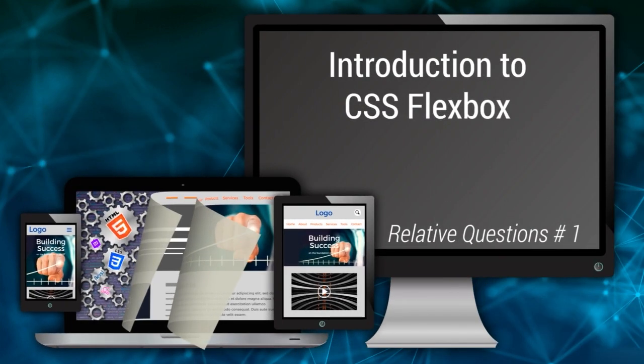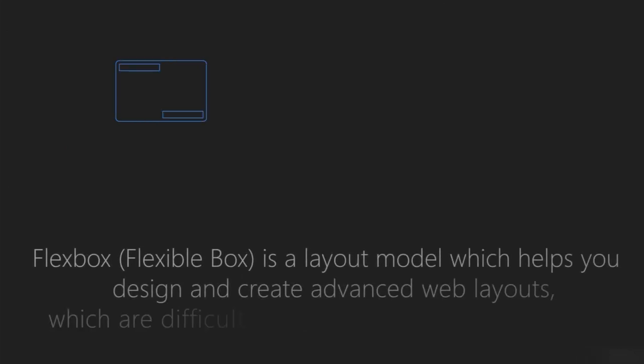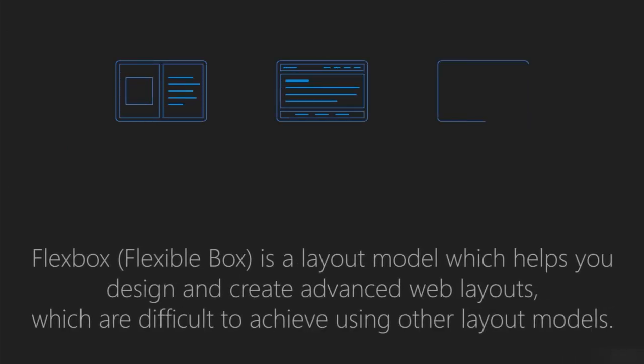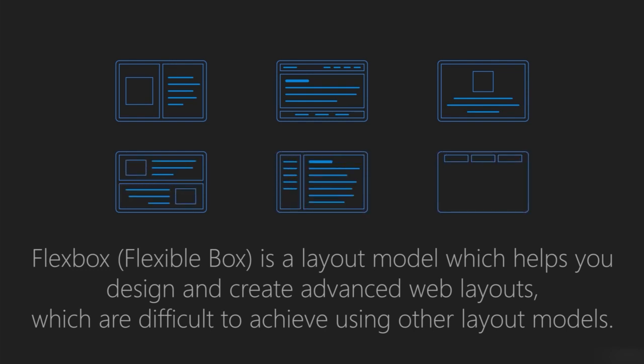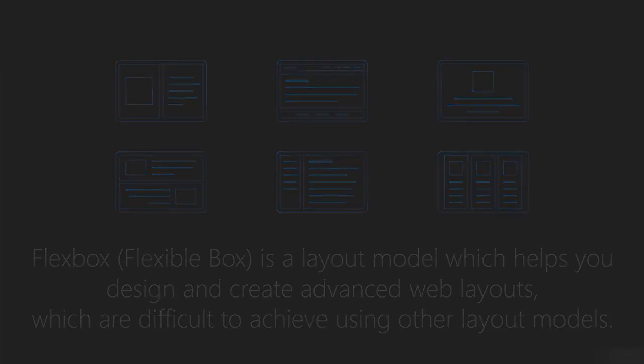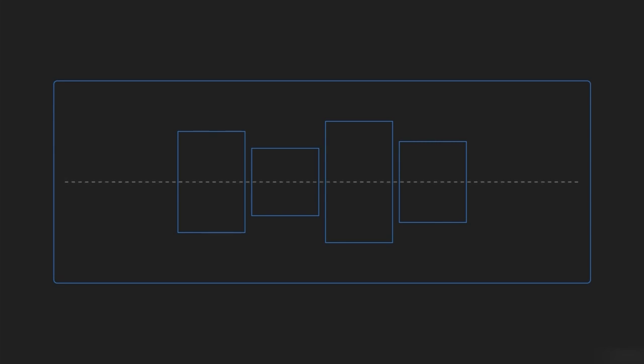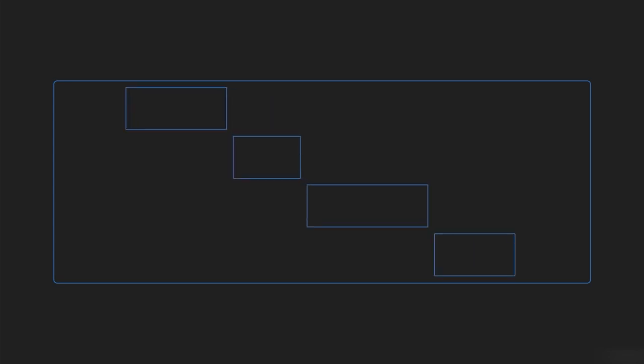Flexbox, also referred to as flexible box, is a layout model which helps you design and create advanced web layouts that are difficult to achieve using other layout models. Flexbox provides flexibility and overall control on how elements are positioned, sized, or aligned within their container. You can flex items to different sizes to fill the space, align them vertically or horizontally, or change their order of appearance or direction.